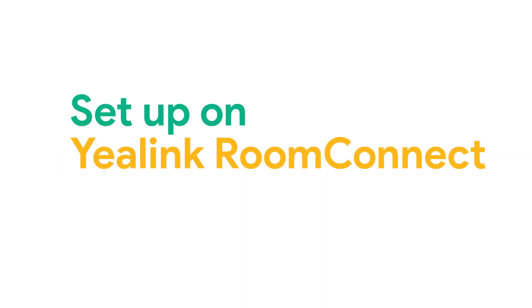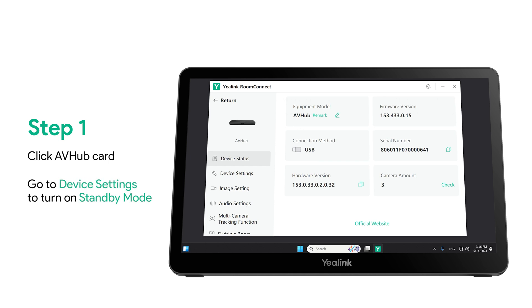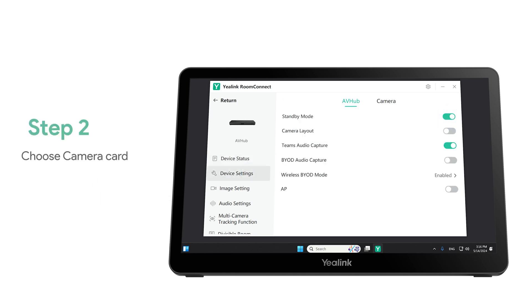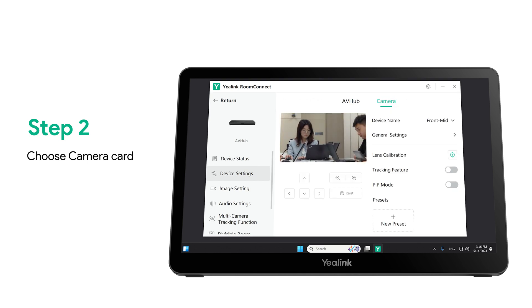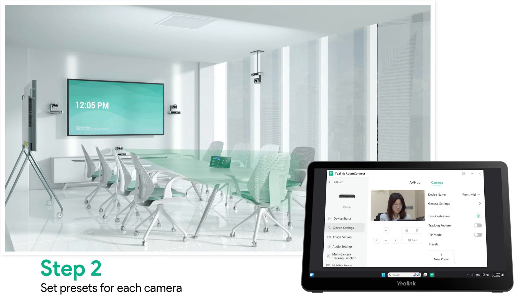Setup on Yeelink Room Connect. Step 1: click the AV Hub Card. Go to Device Settings to turn on Standby Mode. Step 2: choose Camera Card. A camera can set up to 9 preset positions. The presets are based on the camera deployment and the location of the participants.